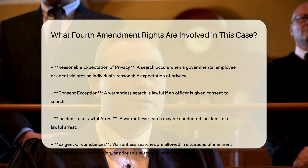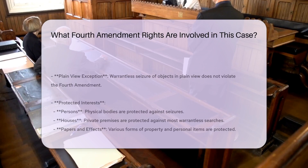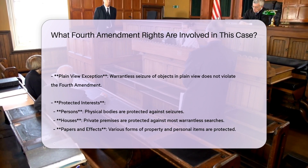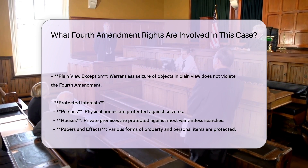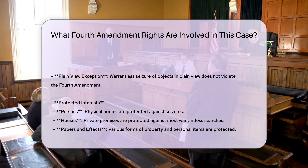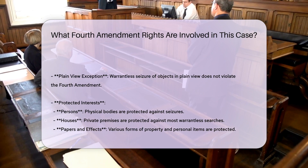Protected interests. One, persons: this includes physical bodies. When a police officer seizes a person, it is considered a seizure under the Fourth Amendment. Two, houses: this includes private premises. Most warrantless searches of private premises are prohibited unless a specific exception applies. Three, papers and effects: these are protected against unreasonable searches and seizures, and can include various forms of property and personal items.